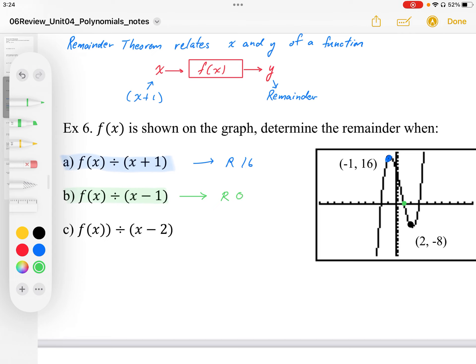And then lastly, for dividing by x minus 2, that's going to be same as substituting x equals 2, and the y value, which is the remainder, then becomes the remainder of negative 8.